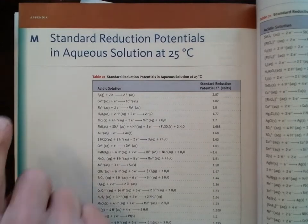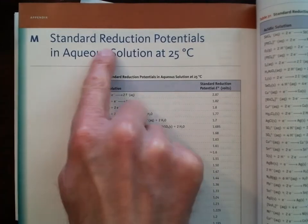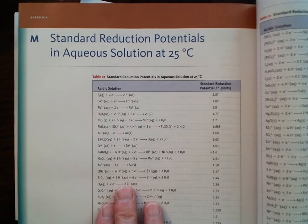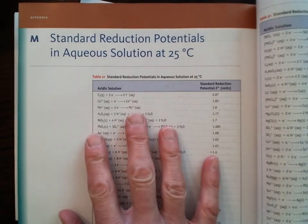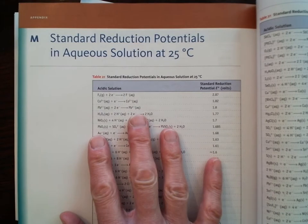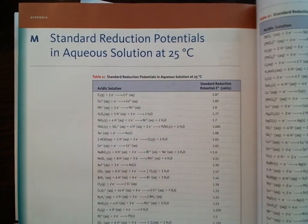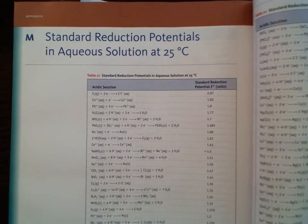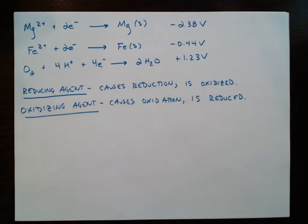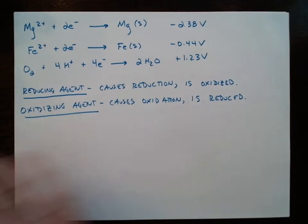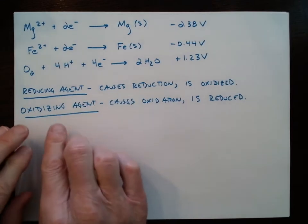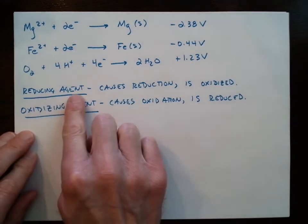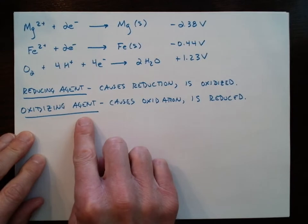I'd like us to look at appendix M — all of the standard reduction potentials — and see how these relate to the terms oxidizing agent and reducing agent. We're not going to look at the entire appendix; we're just going to lift three of the half reactions listed in the standard reduction potential half reactions, and remind ourselves: what is a reducing agent and what is an oxidizing agent?